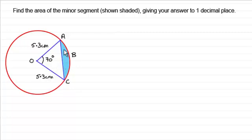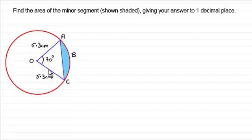To find the area of a segment, I'm going to work out the area of the sector OABC and then from that subtract the area of the triangle OAC.